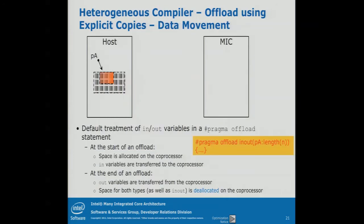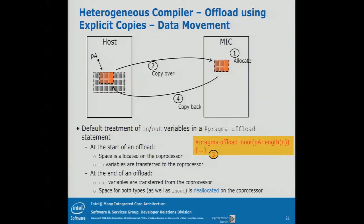And this is what happens when you write 'in-out': first we allocate some space on the MIC, then transfer the data from host memory to MIC memory, execute the code specified in the offload region, then at the end copy back the data you specified, and finally free the MIC memory. That's how you do it.